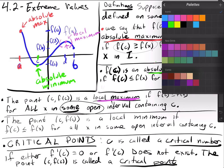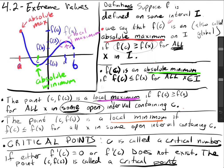What about local minimums — do we have any? Notice I already have an absolute minimum there. Is that a problem? No. You can have a point that is both an absolute extremum and a local extremum. So this is an absolute minimum, but it's also a local minimum. The only thing you can't have is a local max or min at an endpoint.